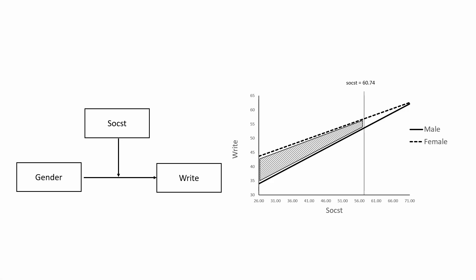In this tutorial I'm going to briefly explain how you can use Excel to make a Johnson-Neyman interaction figure. Let me briefly explain the example we're going to use. We have one IV which is gender, another IV which is social science score, and the dependent variable is writing score. Gender is binary — male or female — social science score is a continuous variable, and writing score is also a continuous variable. We're going to test the interaction effect between gender and social science score on writing score.